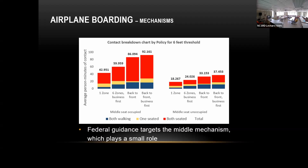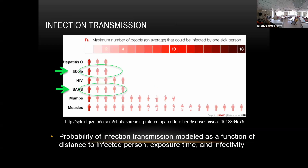We had done only pedestrian dynamics — we said number of contacts reflects infection risk, but it's not proportional. So now we look at the infection transmission aspect. In general, the infection risk varies a lot with the disease and depends both on the distance and on how infectious the disease is.